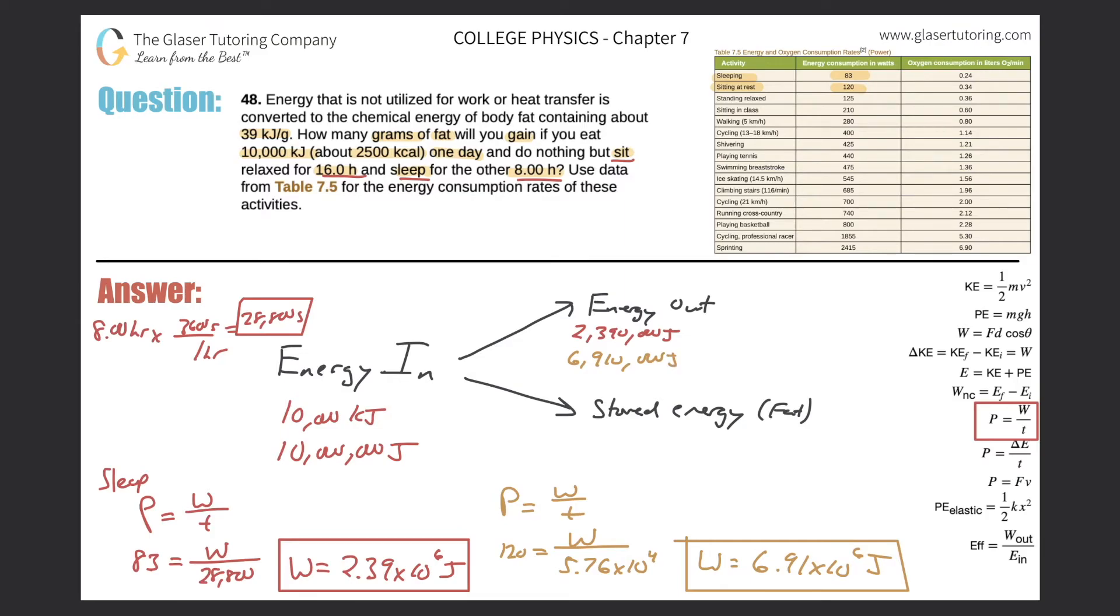Now when we add these two together, what do we get? So we get 2,390,000 plus 6,910,000, so we get 9,300,000 joules. Now that's how much energy that you actually consumed. Or maybe better term would be metabolized. So that's the energy you metabolize, but this is the amount of energy you consumed. So what do we say? If you have an excess of energy that you've consumed over the energy that you've metabolized, guess where it's going, ladies and gentlemen, those love handles.